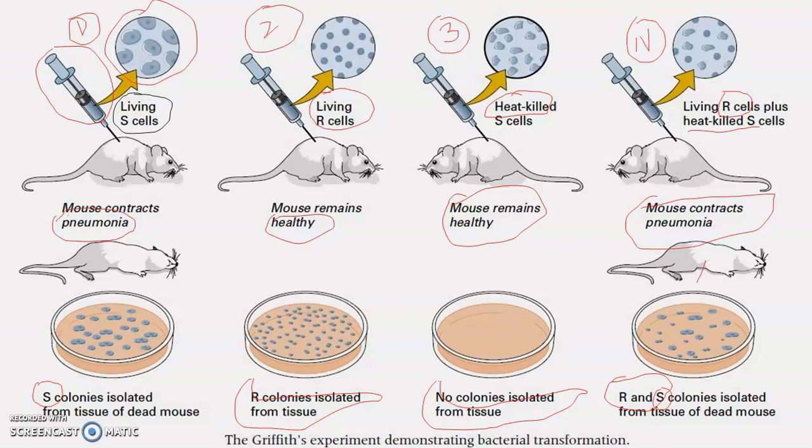This is the conclusion of Frederick Griffith's experiment. He was unable to discover the chemical nature of this 'something' — he simply called it the transforming factor or transforming principle, and the process was called transformation. Frederick Griffith discovered that something from heat-killed S-type cells gets transferred to living R-type cells, transforming them into S-type cells that are pathogenic, virulent, and produce a polysaccharide capsule. This completes Griffith's experiment.